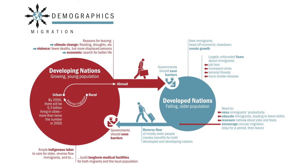Considering Canada's sheer size, the landscape impacts the people and their livelihoods and results in interprovincial and interterritorial migration. Canada's relatively small population and birth rate also impacts the level of immigration, which can result in further national, linguistic, and cultural diversity.